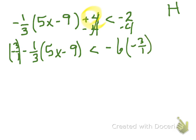So negative three over one. So now it's gone. I multiply both sides by a negative, so I've got to flip my symbol. I've got five X minus nine is greater than a negative times a negative makes this a positive 18 over here.